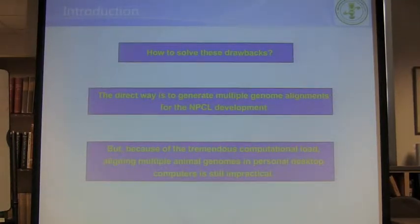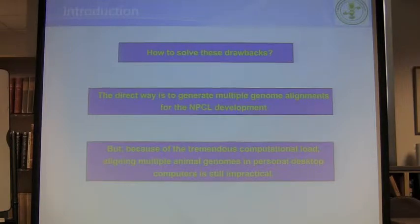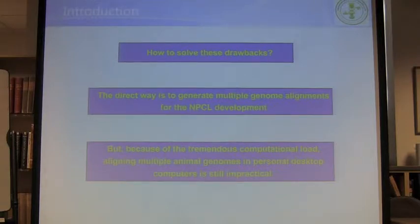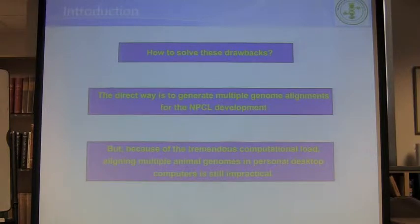To resolve this problem, the very straightforward approach is to align lots of animal genomes together — then everything will be resolved. But because of the tremendous computational load of aligning complete genomes together, not everybody can do that, especially if you just have a desktop computer or a laptop. I can't do that either. So do we have a clever way to do this?